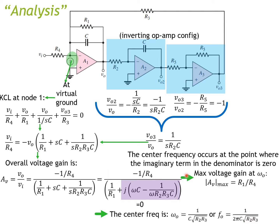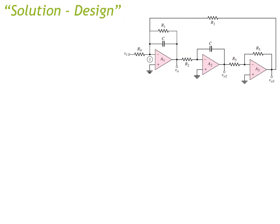At ω₀, the imaginary term is zero, so the maximum voltage gain magnitude |AV_max| simplifies to R1 over R4. The bandwidth is equal to 1 over (2π·R1·C). We have now derived expressions for center frequency, maximum voltage gain, and bandwidth — all matching our specifications.